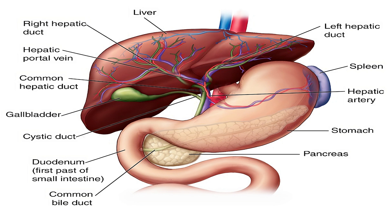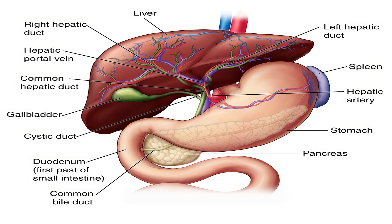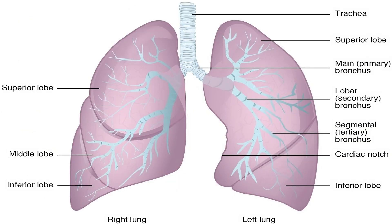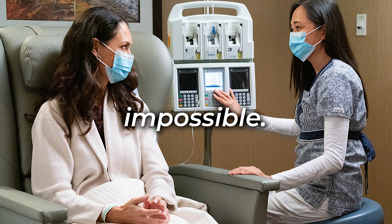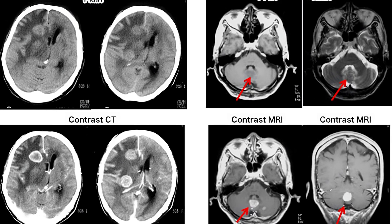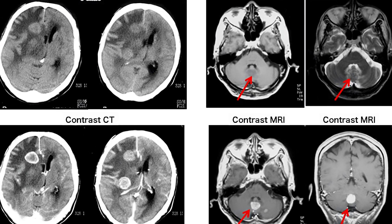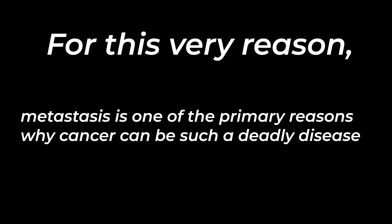Once cancer cells reach a new area of the body, they must be able to survive and thrive in the new environment. This can be challenging, as the new environment may be different from the original tumor site and may not be conducive to cancer cell growth. However, if the cancer cells are successful in establishing new tumors, it will make treatment more difficult and perhaps even impossible. For this reason, metastasis is one of the primary reasons why cancer can be such a deadly disease.